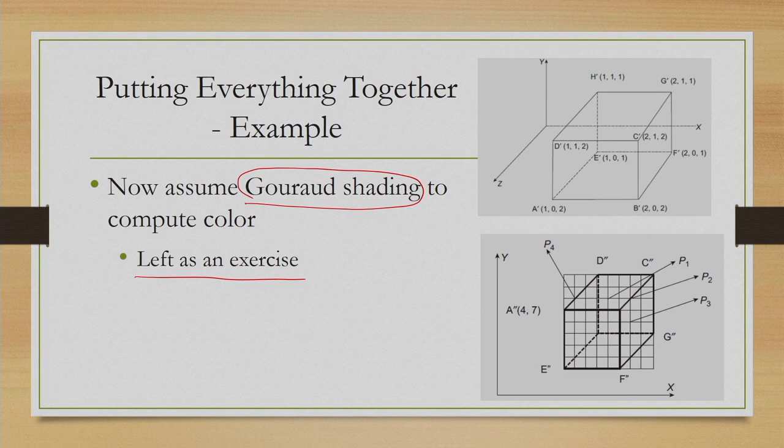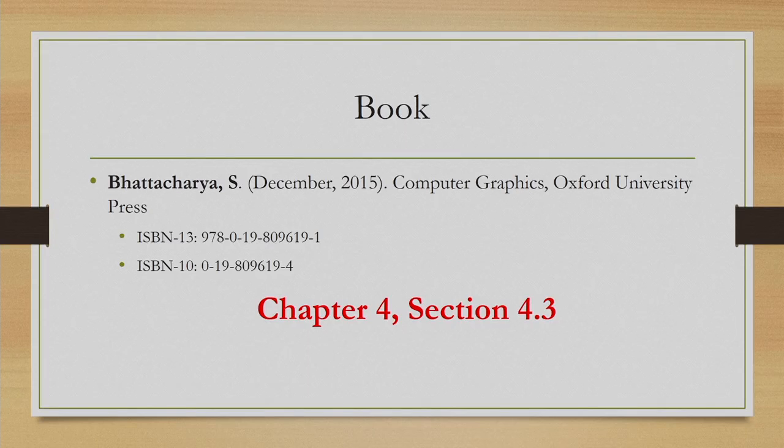We have come to the end of today's lecture. To quickly recap: we learned about the idea of shading and its difference from the lighting model; then we discussed flat shading and Gouraud shading models in detail and outlined the idea of Phong shading. With the illustrative example, I hope you could get some idea of the application of shading models and their advantages over applying only the lighting model to compute colors. For more details, including the ones mentioned at different points, you may like to refer to the reference book. Thank you.